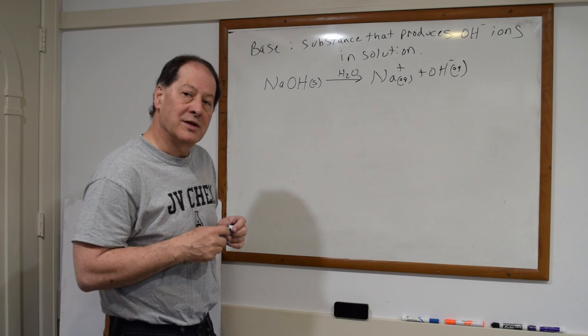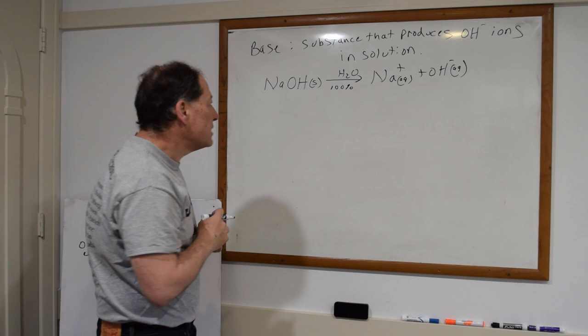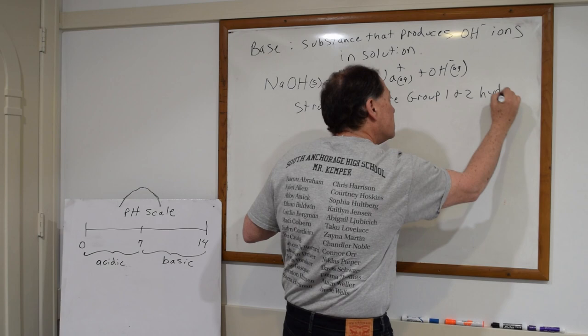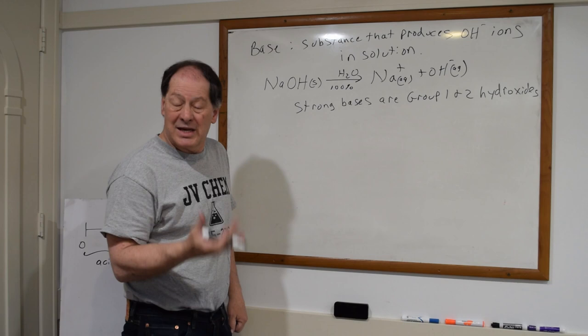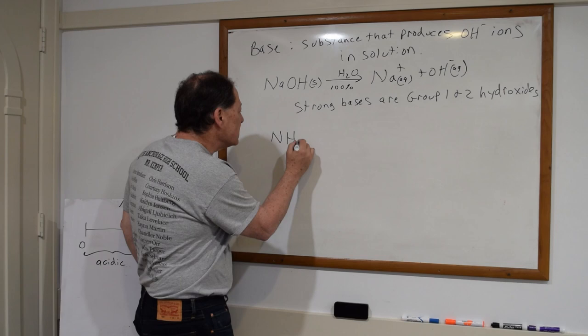Sodium hydroxide is known as a strong base — that means 100% of those molecules actually break down. The strong bases are Group 1 and Group 2 hydroxides: sodium hydroxide, potassium hydroxide, lithium hydroxide, and things like magnesium, calcium, and barium hydroxide are also strong bases. That just means 100% of those break down. A very common weak base is ammonia.